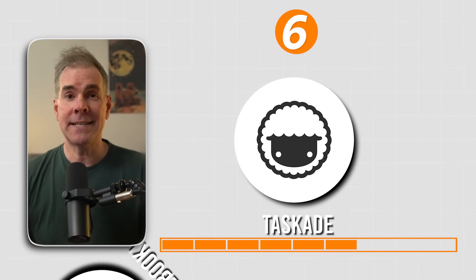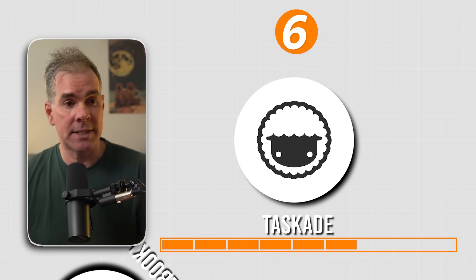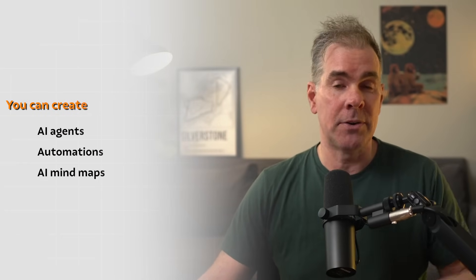Tool number six is called Taskade, and Taskade offers one of the most generous free AI plans I've seen. With Taskade you can create AI agents, AI automations — it's a project management tool. You can create AI mind maps and AI chats. It's a great tool; I used it for a long time, but I found it to be honestly slightly overwhelming. But if you don't mind a tool that can do almost everything in terms of AI workflows combined with project management, you are going to love Taskade.